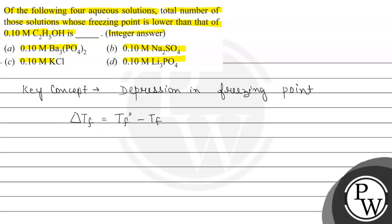Delta Tf is equal to i times Kf times m, where i is the van't Hoff factor, Kf is the freezing point constant, and m represents the molality.